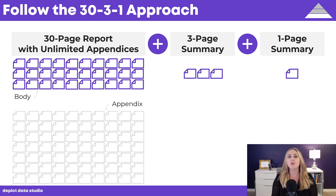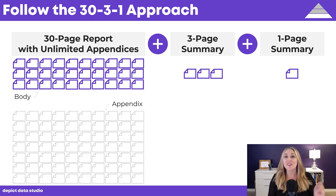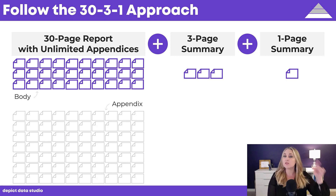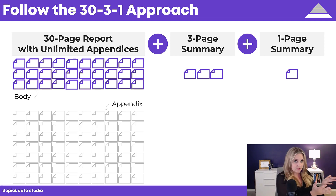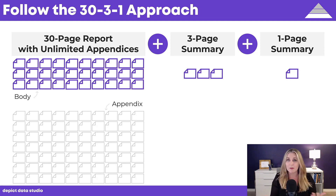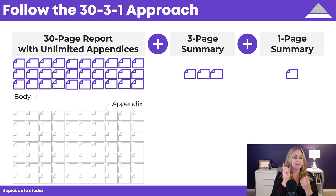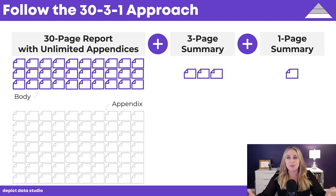3-3-1 goes like this. You write a 30-page report — 30-page max, twenties even better, tens even better — a 30-page report with unlimited visual appendices. We'll talk more about visual appendices in a moment. And then you also write a three-page summary and a one-page summary. So you've got the full version, the mid-range version, and the short version. Honestly, I would say this is the bare minimum for research and evaluation reports. Time and budget permitting, I'd love for you to also write or design a slideshow, a dashboard, an infographic — there are so many different options for sharing data and getting it out of spreadsheets and into conversations. Please consider this the starting point.